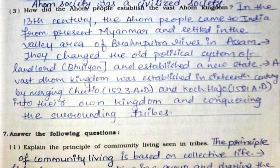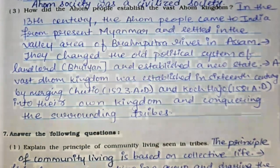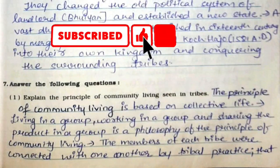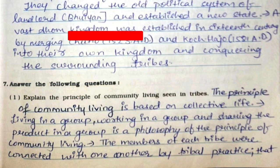Third: How did the Ahom people establish the vast Ahom kingdom? In the 13th century, the Ahom people came to India from present Myanmar and settled in the valley area of the Brahmaputra river in Assam. They changed the old political system of the landlord Buiya and established a new state. A vast Ahom kingdom was established in the 16th century by merging Chutio and Koch Hajo into their own kingdom and conquering the surrounding tribes.